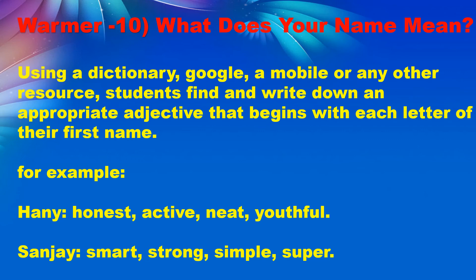For example, the name 'Hany' — H is for honest, A for active, N for neat, Y for youthful. This warm-up can be conducted in two ways. In the first way, each letter of the name uses a different adjective. In the second way, all adjectives begin with the same first letter of the name — for example, 'Sanjay': smart, strong, simple, super. Both approaches work well for this activity.